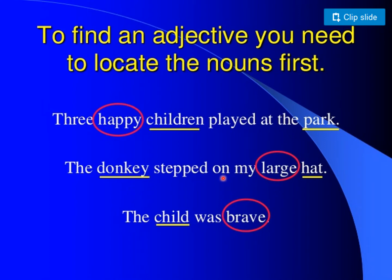The donkey stepped on my large hat. What are all the nouns here? Donkey and hat. Here, the describing word is 'large hat' — what kind of hat is it? It is a large hat. The child was brave. How was the child? He was brave. What kind of child is he? He is a brave child. It answers the question: what kind?